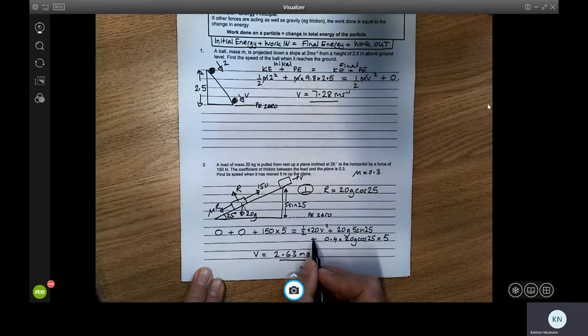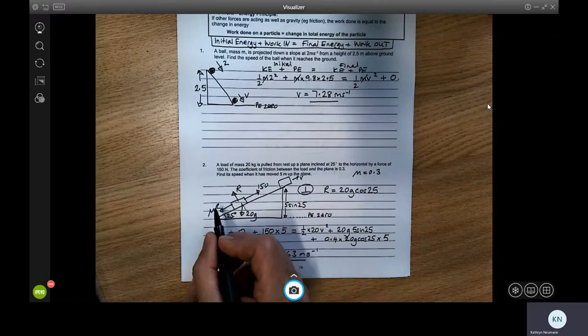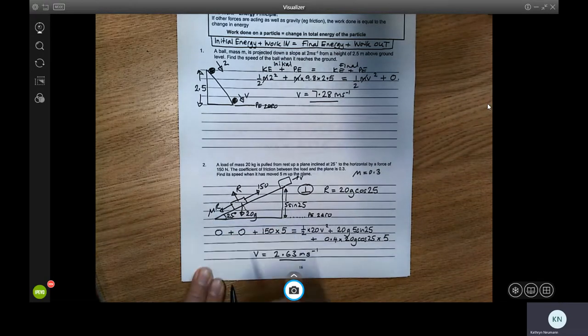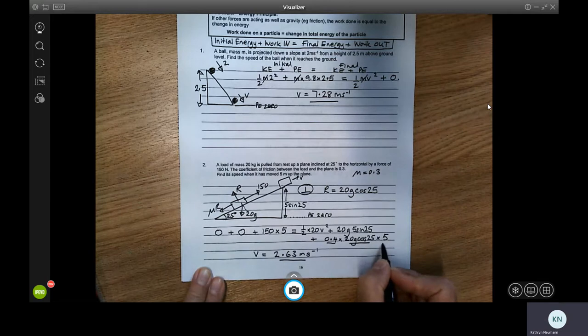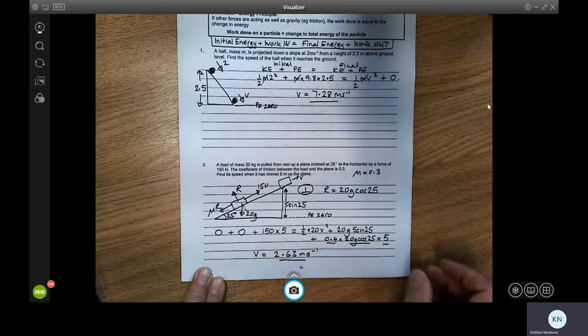But we must also add at the end the work that's been taken out of the system. So the work that's been taken out of the system is the work done against this frictional force. So we've got mu multiplied by R multiplied by the distance. The only thing we don't know in this equation is V. So if we calculate all of this and rearrange, we get that V is equal to 2.63.